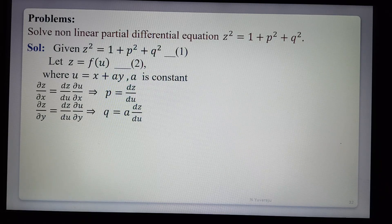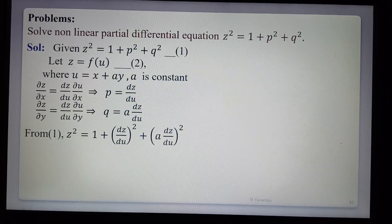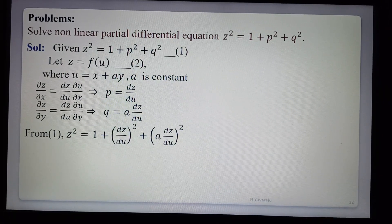Substituting p and q into equation 1: z² = 1 + (dz/du)² + (a · dz/du)².